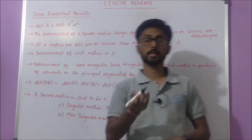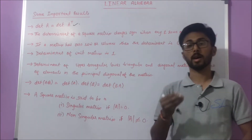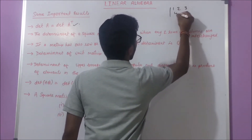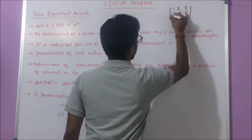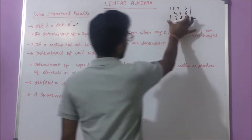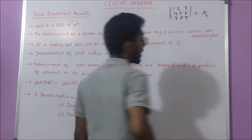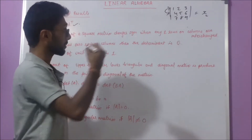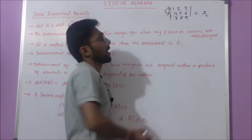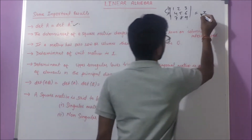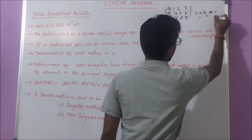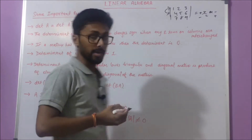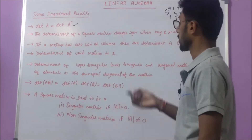The second result is: the determinant of a square matrix changes sign when any two rows or columns are interchanged. Suppose a matrix is given as 1 2 3 / 4 5 6 / 7 8 9 and the determinant of this matrix is x. If we interchange any two rows, the magnitude of the determinant remains the same but the sign changes from positive to negative or negative to positive.